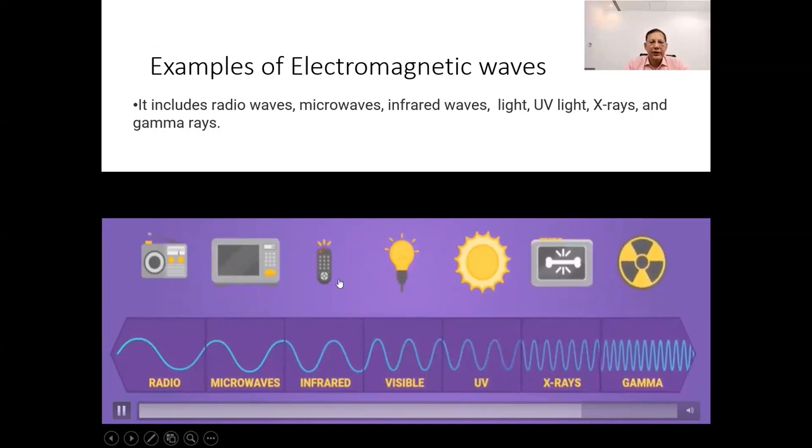Examples of electromagnetic waves include radio waves, microwaves, infrared radiation, visible light, ultraviolet radiation, x-rays, and gamma rays.